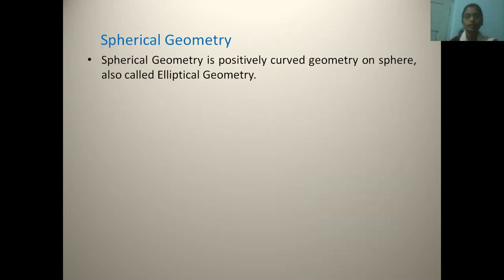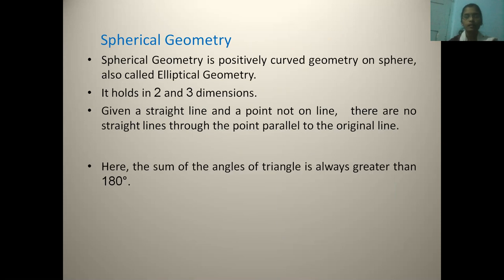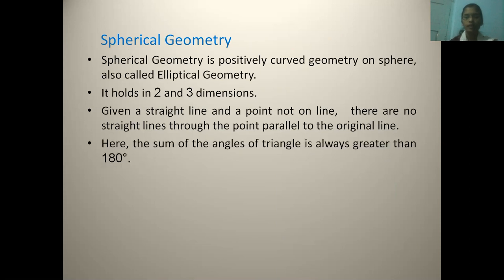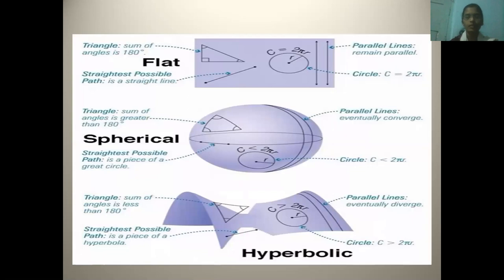The spherical geometry. It is the positively curved geometry, also called as elliptical geometry. It holds in two and three dimensions. And here, the sum of angles of triangle is always greater than 180 degrees. From this image, you can compare the three geometries: that is flat, spherical, and hyperbolic geometry.